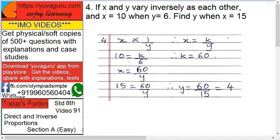So what is given? X equals 10 when Y equals 6. So 10 equals K upon 6. K equals, take 6 on this side, 60. Therefore, X equals 60 upon Y.